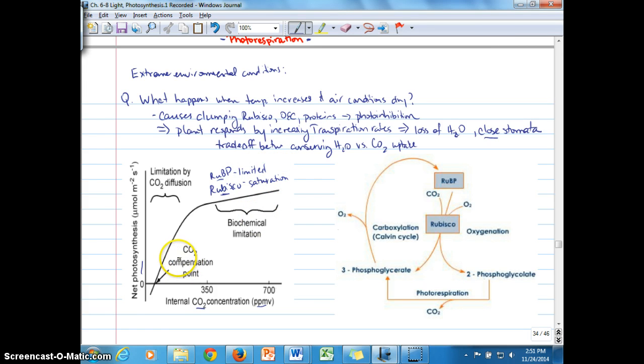Like the light response curve, we saw that there was a compensation point. And so this is what we're going to focus on right here, is that at this point, when CO2 concentrations get low enough, then photosynthesis rate drops.